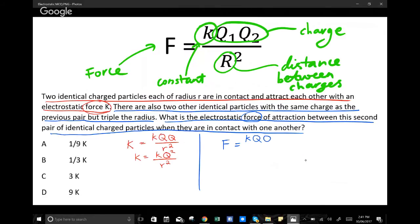And because they have the same charge as previous, let's just use Q again. So it's Q and Q. But now here's what's different: it's triple the radius. So we substitute in three little r.